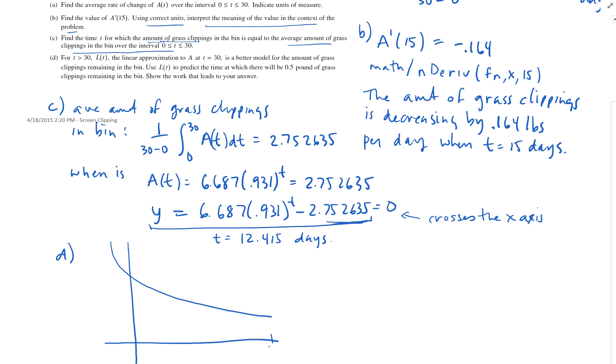Well, just to give you an idea of what this looks like, A is exponential, 6 times .9 to the t is decreasing. So it goes like this out to 30. At this point right here, they're saying the tangent line after 30 is a better model than the curve. So make a straight line with that tangent line.